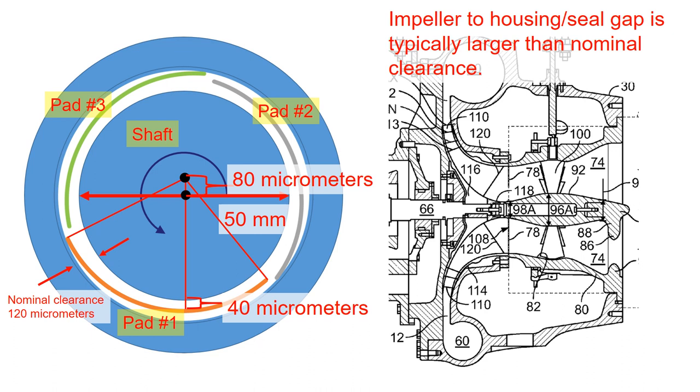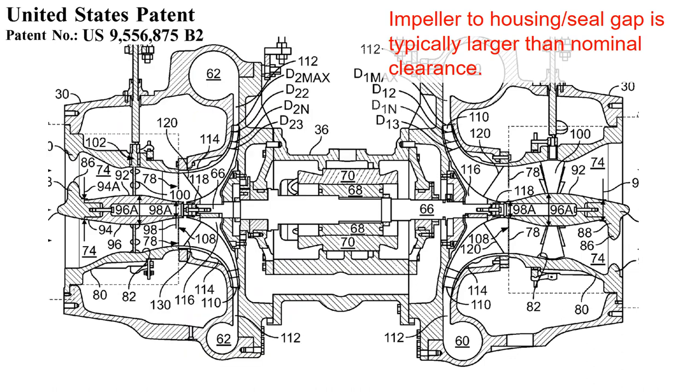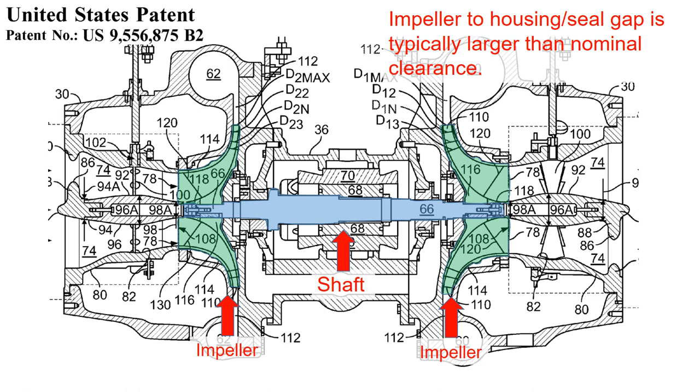It is also important to understand that the bearing clearance dictates the impeller tip clearance. Here is a better description. Here is a shaft, and impellers are attached to the shaft, and the bearing supports the shaft and impeller assembly. The impeller clearance is typically larger than the bearing clearance, so that the shaft can move freely without the impeller hitting on the housing or seal.